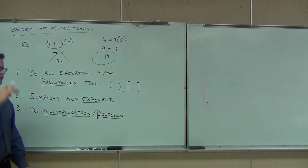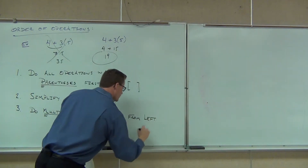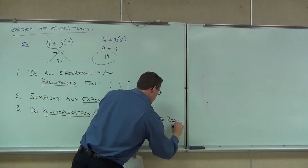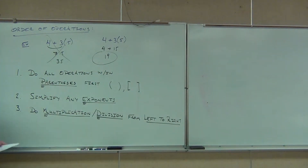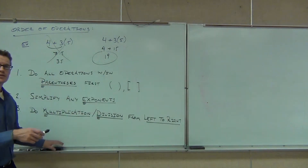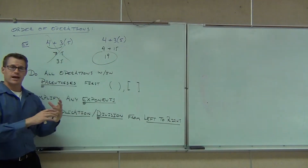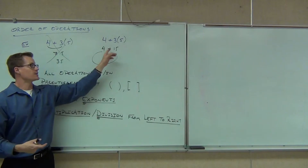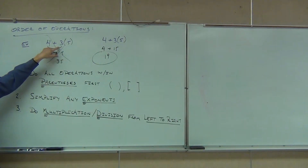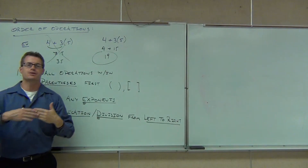Do multiplication and division from left to right — that's an important one. So let's see why one answer is right and another is wrong. We go through the example: parentheses first — these don't really count, nothing to do inside. Go to exponents — no exponents. Then multiplication and division. Is there any? Yes, it's a three times five. We went out of order here — we added first, that was wrong. We had to multiply first. That's why this one's right and that one's wrong. Multiplication definitely comes before our addition.